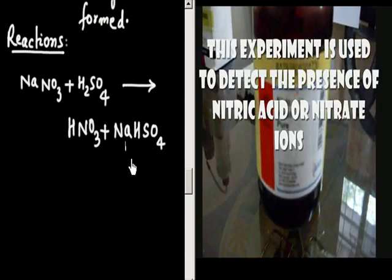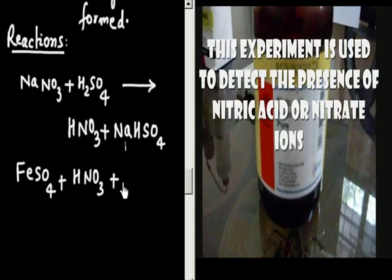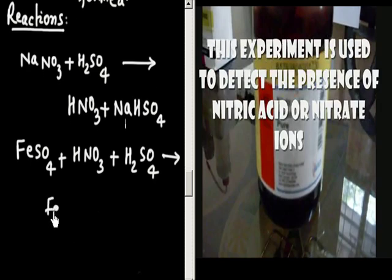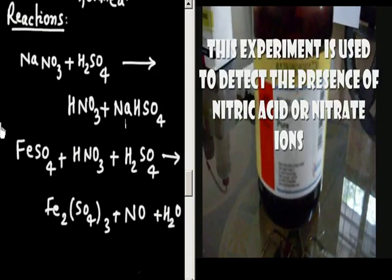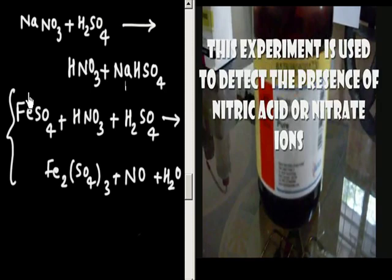Now in the next step, FeSO4 reacts with HNO3 plus H2SO4. This forms Fe2(SO4)3 and NO is released — this is the oxidation-reduction reaction. Fe²⁺ goes to Fe³⁺, and NO3⁻ goes to NO. If you balance the equation using half-reactions, the coefficients are: 6 FeSO4, 2 HNO3, 3 H2SO4, yielding 3 Fe2(SO4)3, 2 NO, and 4 H2O.